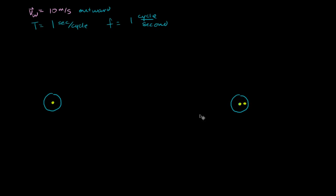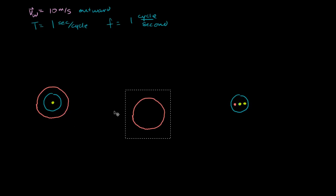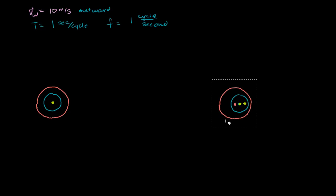Now let's think about the crest that both sources emitted 2 seconds ago. The stationary source has been there the whole time, so its crest from 2 seconds ago will be 20 meters radially outward from the center. The moving source, however, wasn't here 2 seconds ago — 1 second ago he was 5 meters to the left, and a second before that he was 5 more meters to the left. So that wave is going to be 20 meters radially outward from that earlier position.